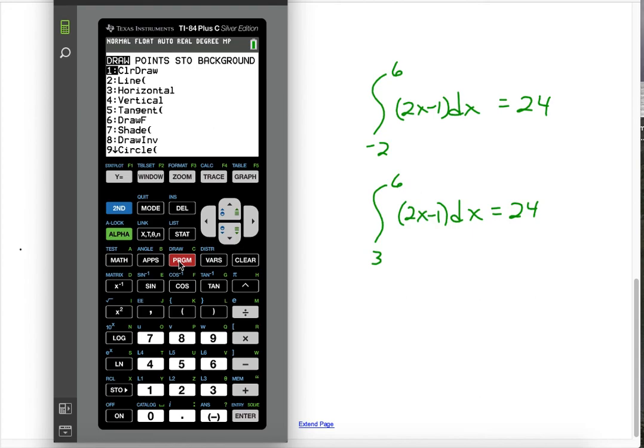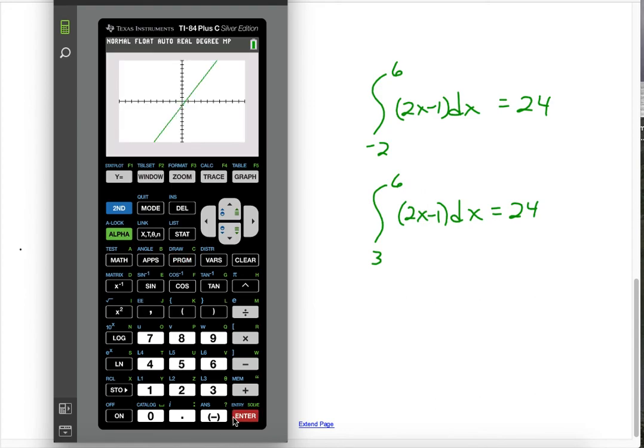Now, let me clear draw. So, I went to second, program to the draw menu, and I'm choosing number 1, clear draw, so it takes away the shading. And now I'll do the same process again, except this time I'll do it from 3 to 6. And once again, we get 24.